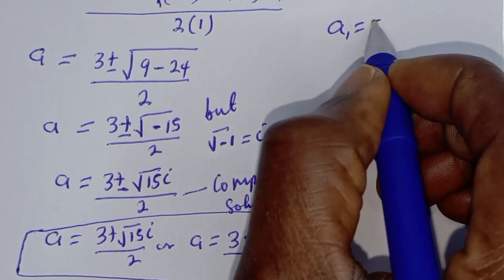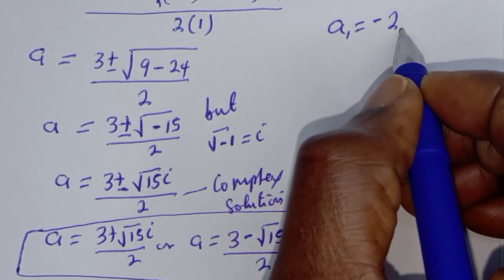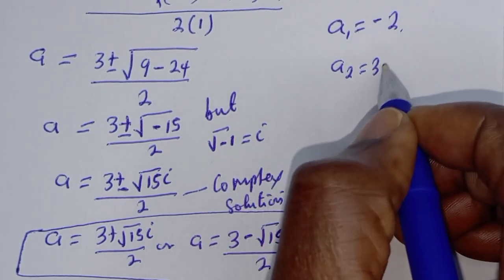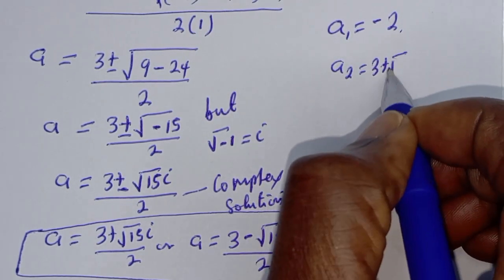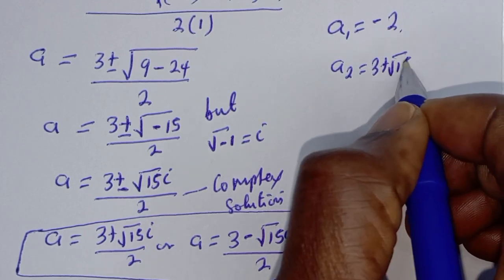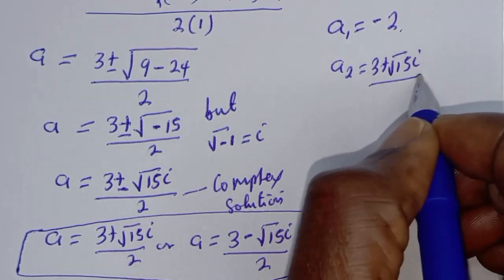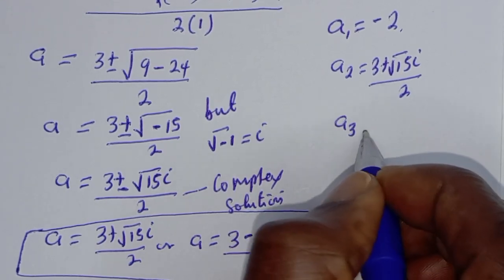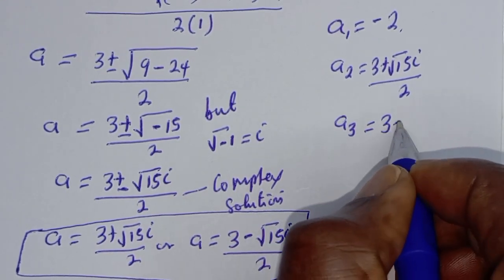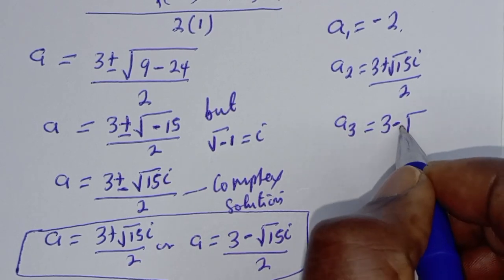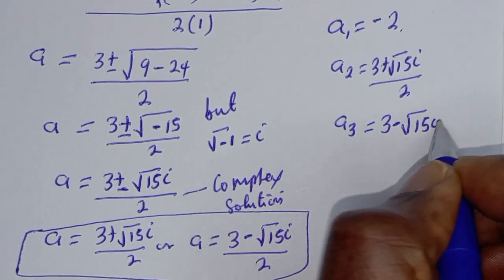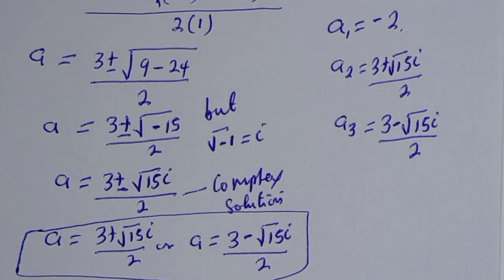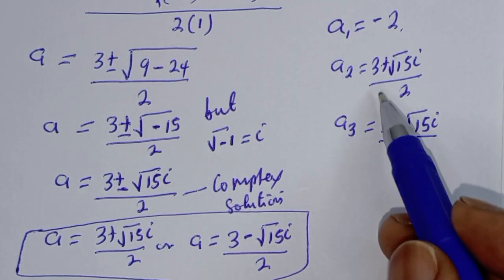So a₂ equals 3 plus square root of 15 i, over 2, and a₃ equals 3 minus square root of 15 i, over 2.